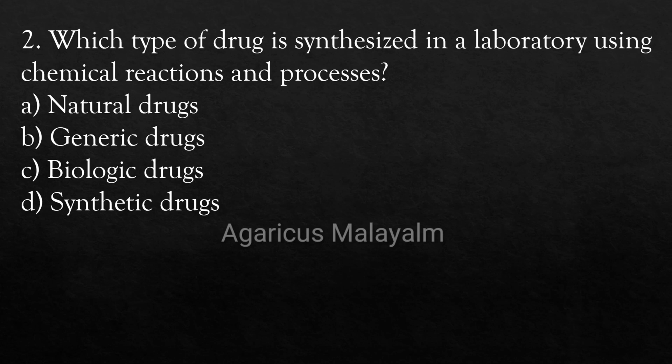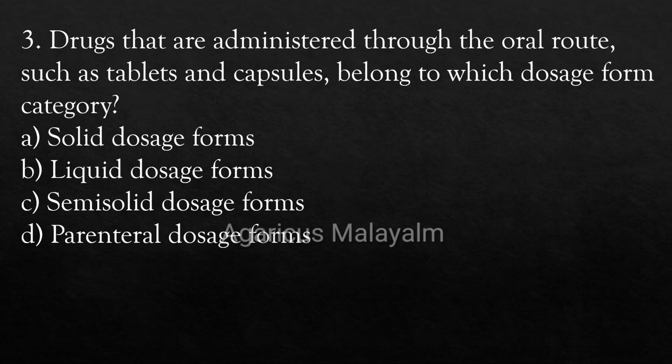Question 2: Which type of drug is synthesized in a laboratory using chemical reactions and processes? Option A: Natural Drugs, Option B: Generic Drugs, Option C: Biologic Drugs, Option D: Synthetic Drugs. Correct Answer: Option D — Synthetic Drugs.